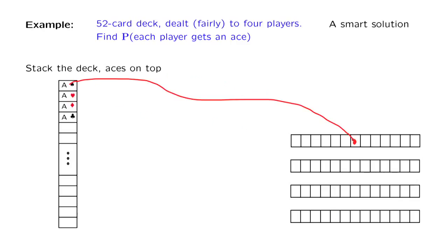The first ace can go anywhere. It doesn't matter. For the second ace, it has 51 slots to choose from. It's 51 because we started with 52, but one slot has already been taken by that particular ace. So for the ace of hearts, we have 51 slots that it can go to.